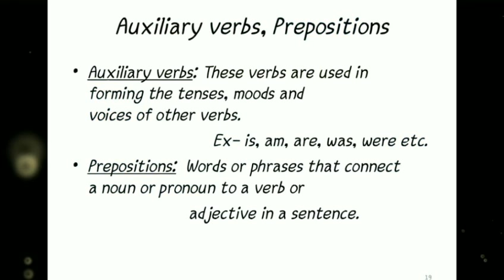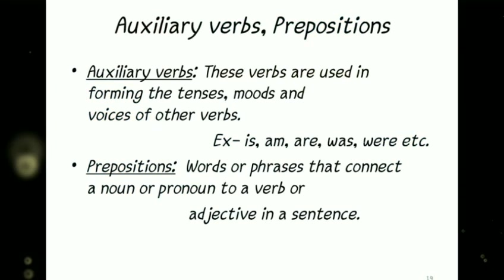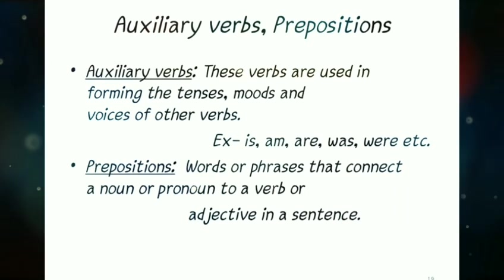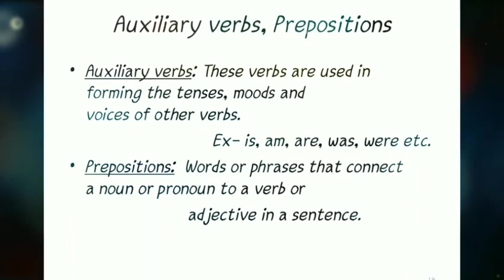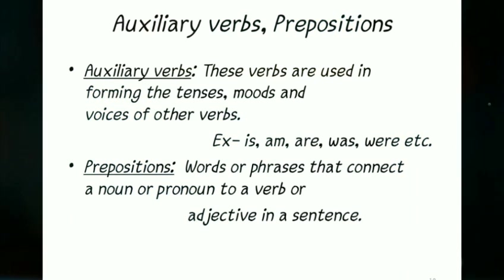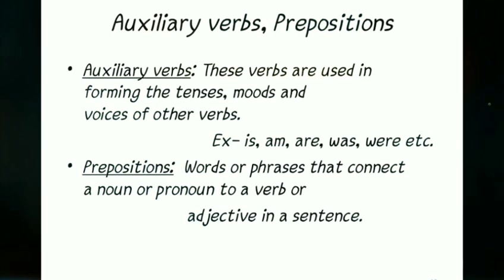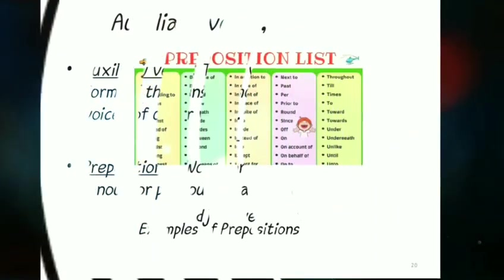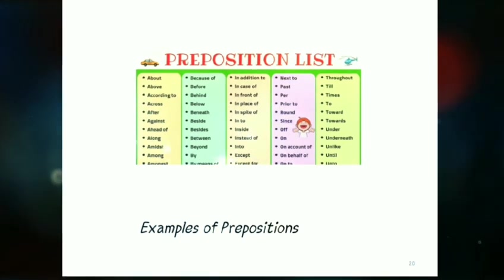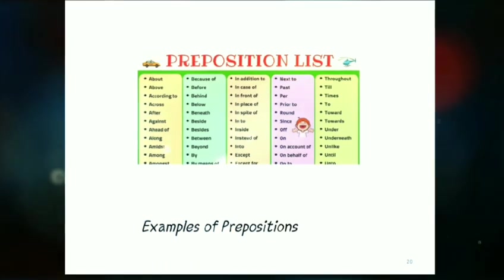Examples of auxiliary verbs: is, am, are, was, were. Prepositions are words or phrases that connect a noun or pronoun to a verb or adjective in a sentence. Examples of prepositions: about, above, according to, across, against, ahead of.